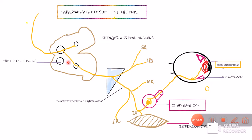In my video on the nerve supply of the pupil — specifically the parasympathetic nerve supply — I already explained how the sphincter pupillae, which is the final muscle responsible for miosis or pupillary constriction in response to the light reflex and the near reflex, gets its nerve supply. We know that from the optic tract, a few pupillary fibers will come to the pre-tectal nucleus, and after reaching the pre-tectal nucleus they will go via interneuronal neurons to both the Edinger-Westphal nuclei.